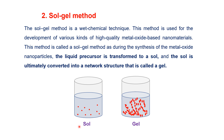In a sol, there are two phases: the dispersion medium and the dispersed phase. In a sol, the dispersion medium is liquid while the dispersed phase is solid. In a gel, it is a network of connecting structures where the dispersed phase is liquid and the dispersion medium is solid. Both sol and gel are formed during synthesis, which is why this method is called the sol-gel method.